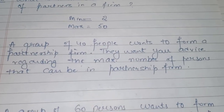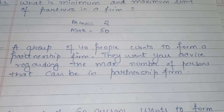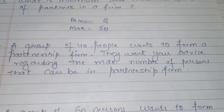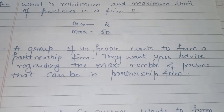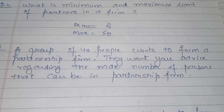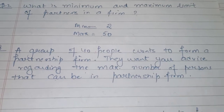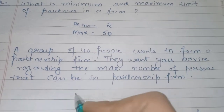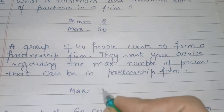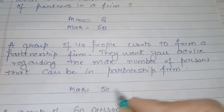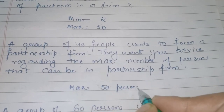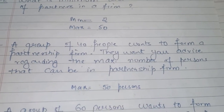Next question, which has also appeared on the board exam: A group of forty people want to form a partnership firm. They want your advice regarding the maximum number of partners that can be in a partnership firm. Your advice would be that the maximum will be fifty persons — so forty is perfectly valid.